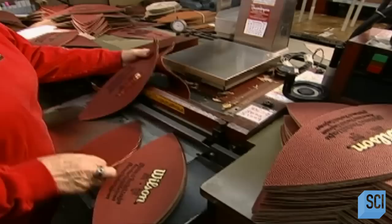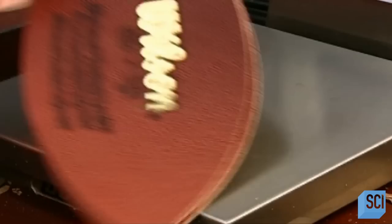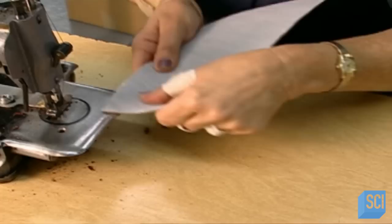Each of the sections goes into a machine that trims the piece's combined weight down to spec. To strengthen the skin, a seamstress sews cotton and vinyl linings onto all four sections.